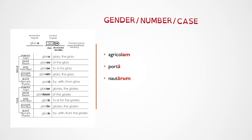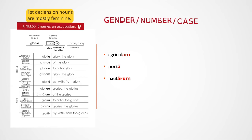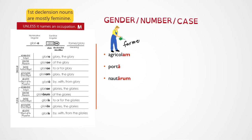In the first declension, when it comes to gender, mostly first declension nouns are feminine. However, there's one exception: whenever a noun names a job or occupation, then it's actually going to be masculine instead. Our first word is agricolam. Looking at that ending — the am — what is its gender, number, and case? Well, let's check the meaning. Agricola means farmer. And that is actually naming a job or occupation, so agricola is going to be masculine. Looking at our endings in our chart, we see that am in the singular accusative. So our form here is going to be masculine, singular, accusative.